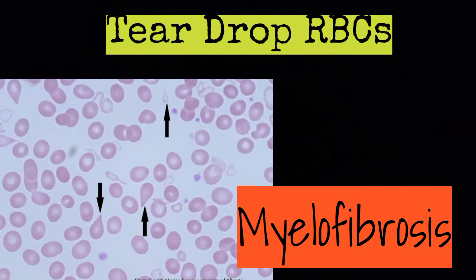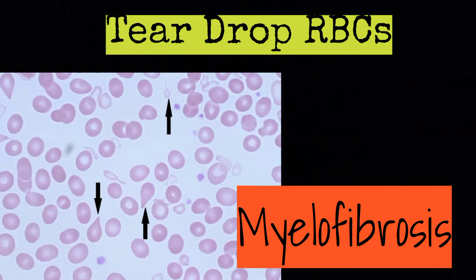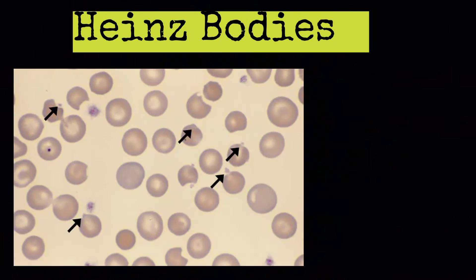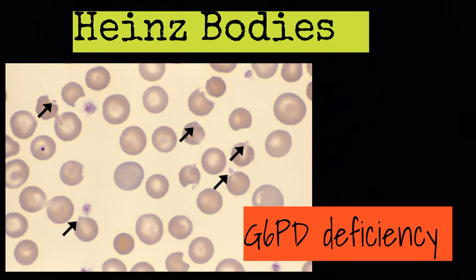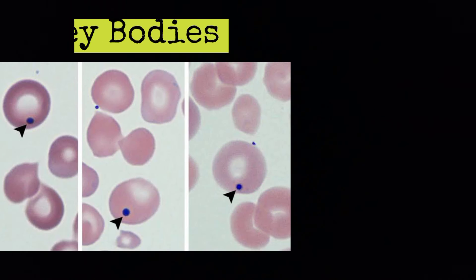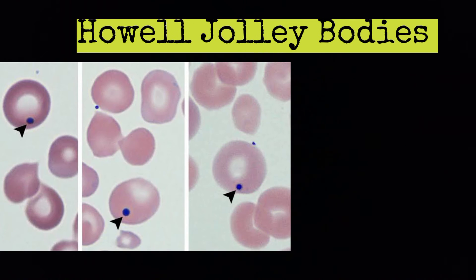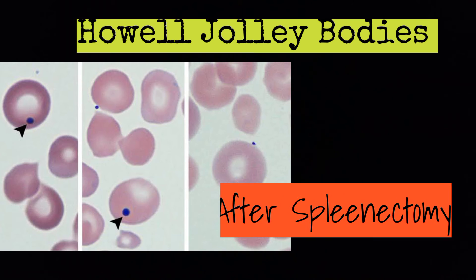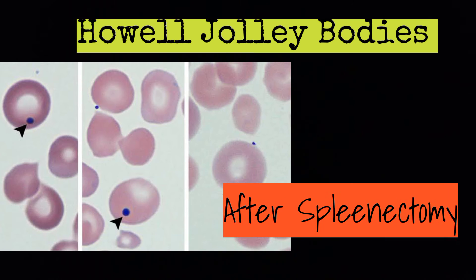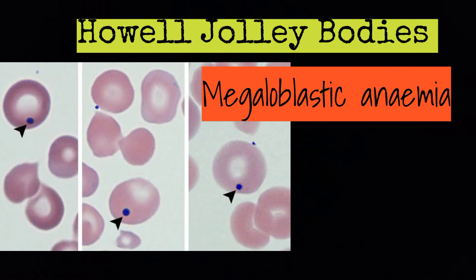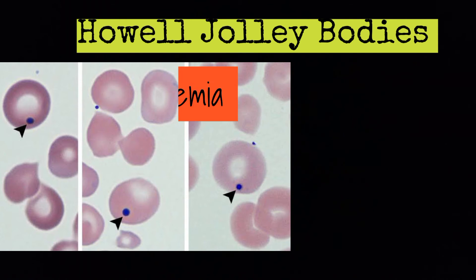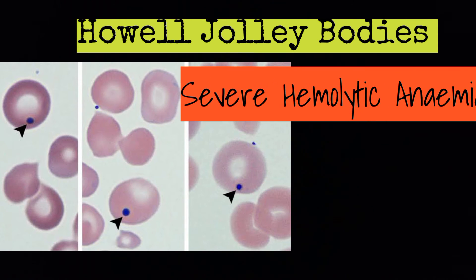Teardrop RBCs are present in myelofibrosis. Heinz bodies are present in G6PD deficiency. Howell-Jolly bodies — examples: after splenectomy, megaloblastic anemia, and severe hemolytic anemia.